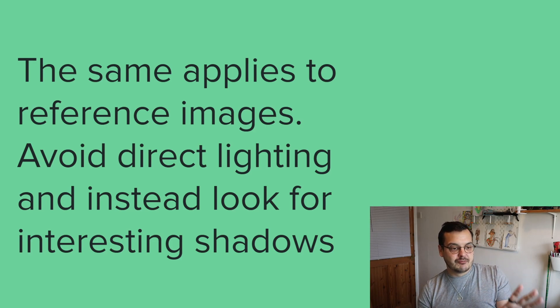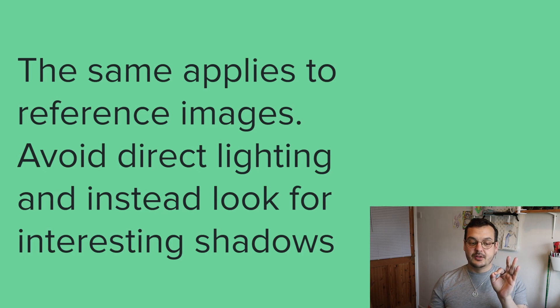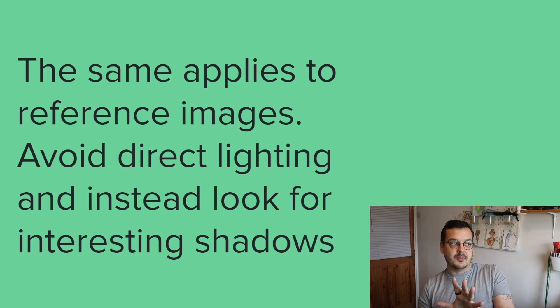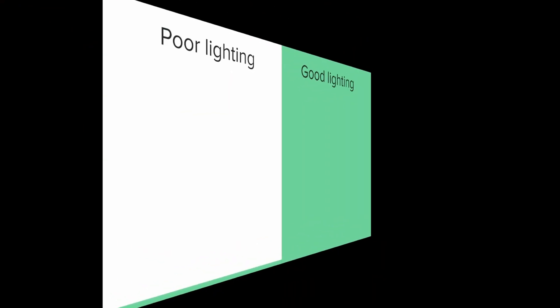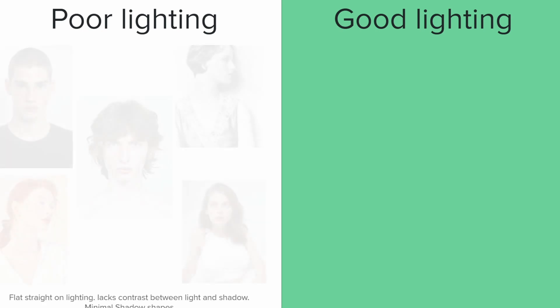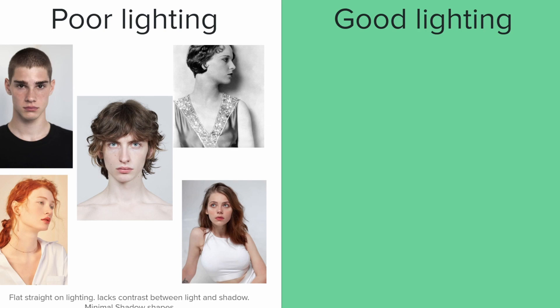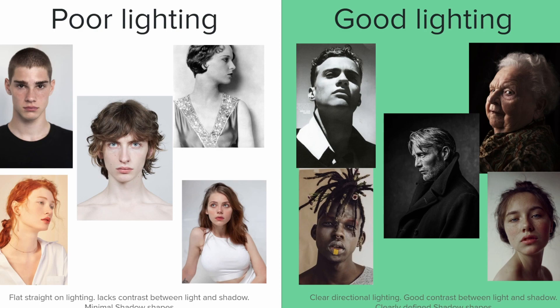The same thing with the rectangles applies to reference images. Avoid direct lighting and instead look for interesting shadows. Here are some images that have poor lighting — the lighting is flat and straight on, it lacks contrast between the light and the shadow, and there are minimal shadow shapes. They overall look very flat, and if you try to draw this you'll probably end up with just an outline drawing. Here's an example of good lighting — all of these have clear directional lighting, really good contrast between the light and the shadow, and really clearly defined shadow shapes. You get a real sense of the volume of those heads, where the other ones could be cardboard cutouts.